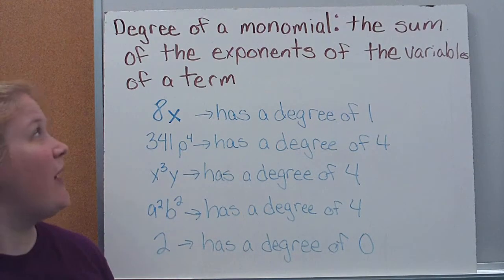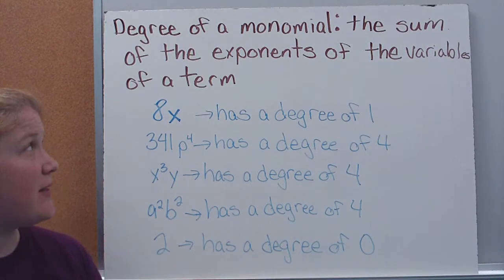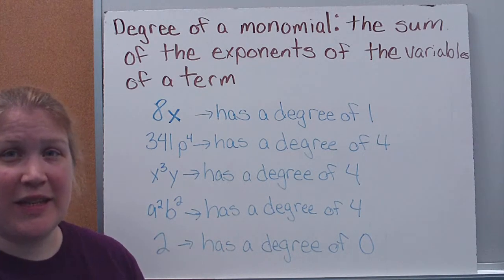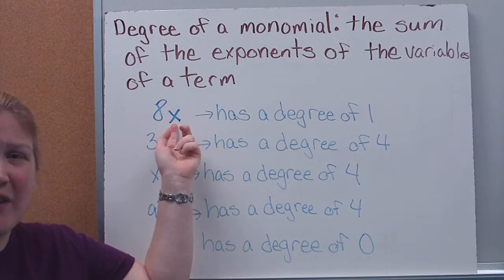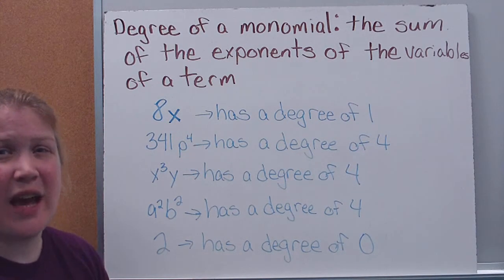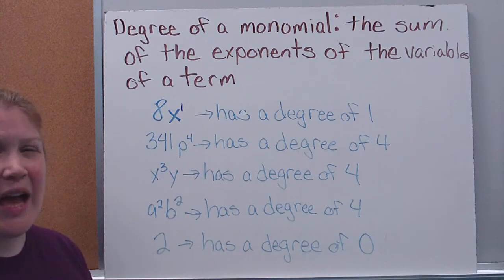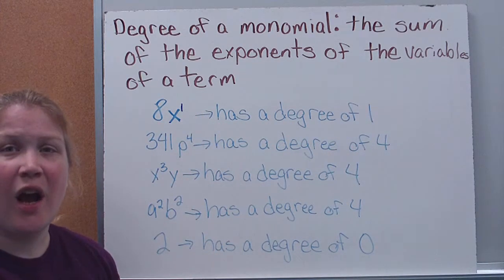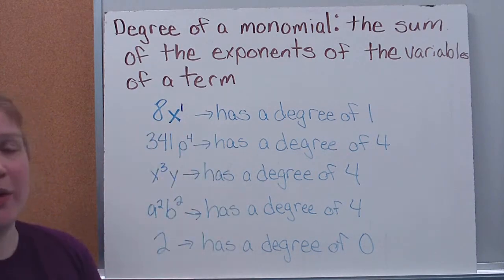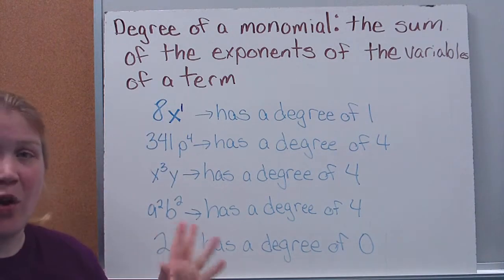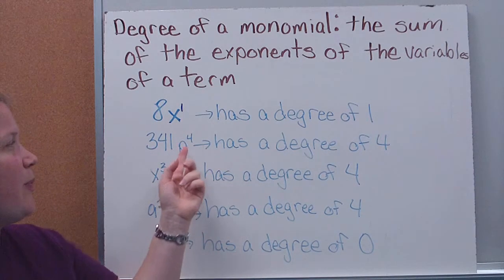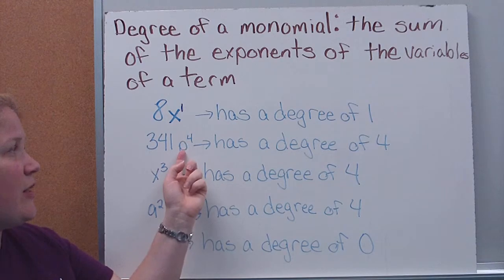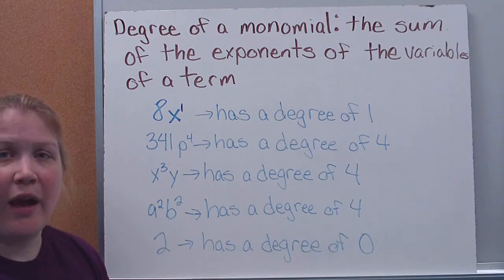Now we want to look at the degree of each. The degree of a monomial is simply the sum of the exponents of its variables — so we're only looking at variables and the exponents attached to them. If I have an x, remember there's an implied 1, so this is x to the first — it has a degree of 1. Ignore the coefficient; it doesn't help us with the degree. Here I have 341p to the fourth — there's only one variable with an exponent of 4, so this has a degree of 4.